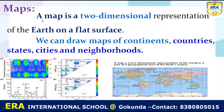A map is a two-dimensional representation of the earth on a flat surface. We can draw the map of continents, countries, cities, states, and other neighborhoods.